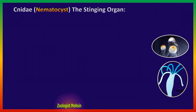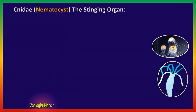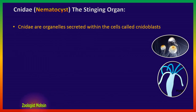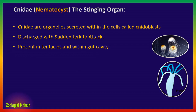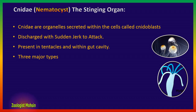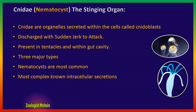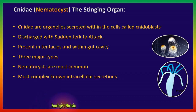Now let's talk about the most asked and most important topic — Cnidae, nematocysts, the stinging organs. Cnidae are organelles secreted within cells called cnidoblasts. Cnidae are basically discharged with a sudden jerk to attack, and they are present in tentacles and within the gut cavity all around. There are three major types of Cnidae, and among the three, the most important or most common is the nematocyst. These Cnidae are the most complex intracellular secretions and are only present in these cells.